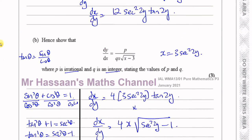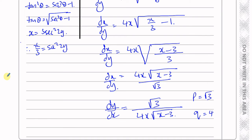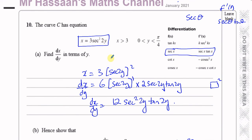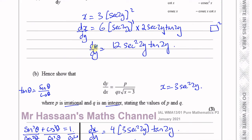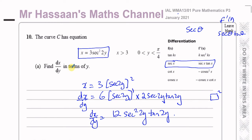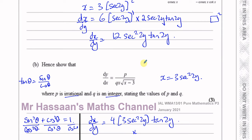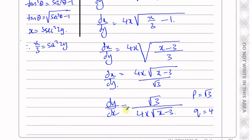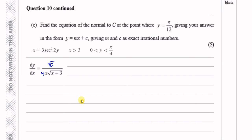So there we have the answer to part B. That's a nice question about reciprocal trig functions, identities, and differentiation. It's important to understand how to deal with these types of questions — making the differential in terms of x, using dx/dy first and then replacing y terms with x's. Now for part C: find the equation of the normal to C at the point where y = π/12, giving your answer in the form y = mx + c with m and c as exact irrational numbers.